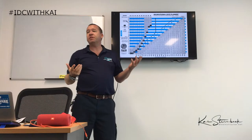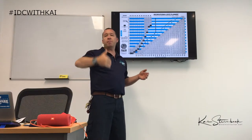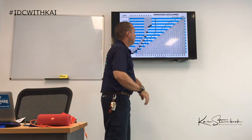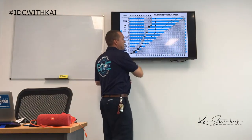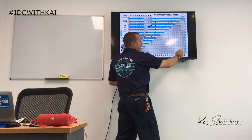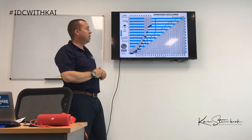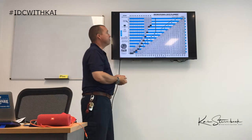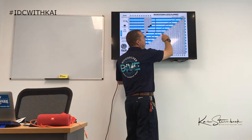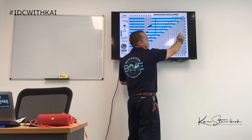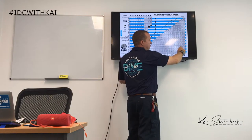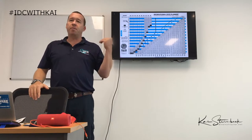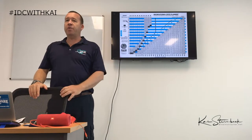The next table is the surface interval table. From the time I surface to the time I go back in the water, my body eliminates nitrogen, and this table calculates that. I was in pressure group K, so I move along until I find one hour — which falls between 55 minutes and 1 hour 16. Moving down, I find pressure group C. So I've eliminated nitrogen from K down to C in that hour at the surface.